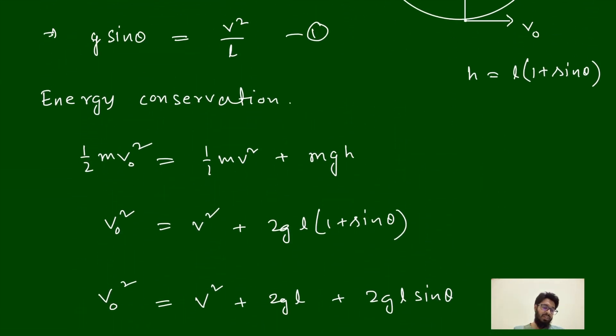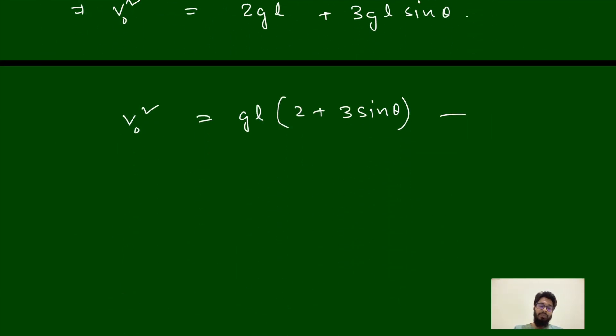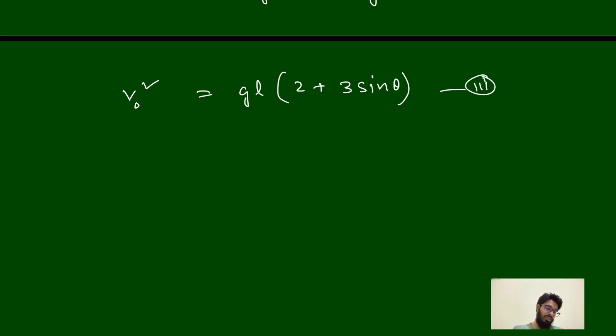One equation we can take from here. This equation 1: v square is equal to gL sin theta. This is equation 2, suppose, and this equation 3. Just divide these two equations, then equation 2 divided by equation 3.